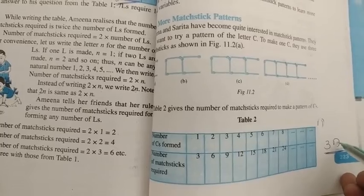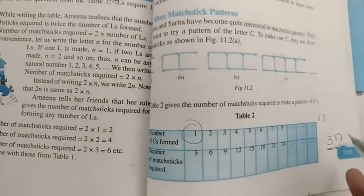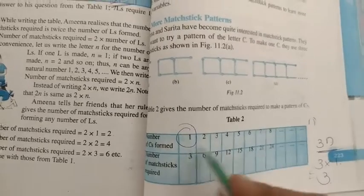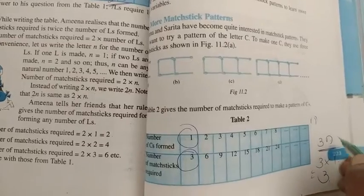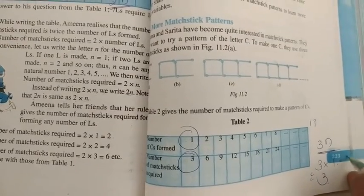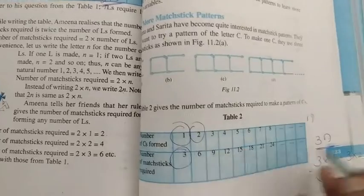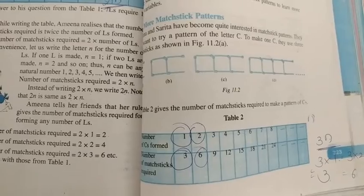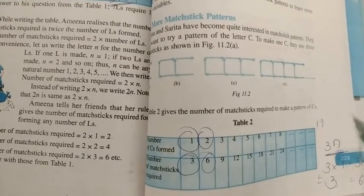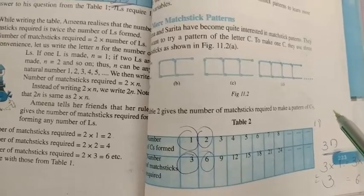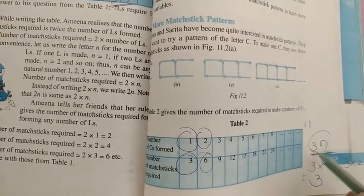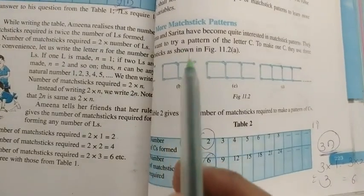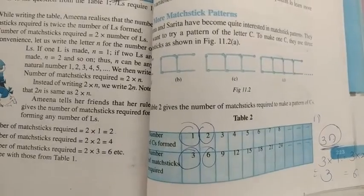See here children, you put 1 here. 3 into 1, 3 ones are 3. You get 3. Next, 3 into 2, 3 twos are 6. 6 matchstick required. Lastly, you form n number of C's. 3n matchstick required. Matchstick pattern C. Lastly, you get answer, number of matchstick required 3n. 3 into n.